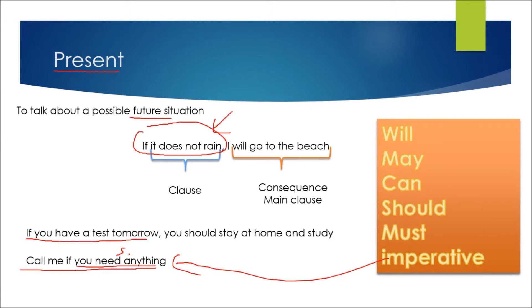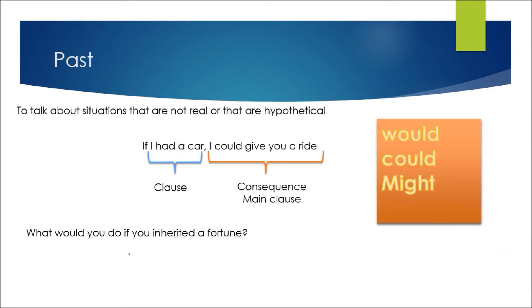The first type was the possibility in the present. The next one is in the past — in general, the past is used to talk about ways that are not real, or hypothetical possibilities. For example: 'If I had a car, I could give you a drive.' I don't have a car, so that's a possibility. 'If I had a diploma, I could get a job.' In general, you apply 'would', 'could', and 'might'.